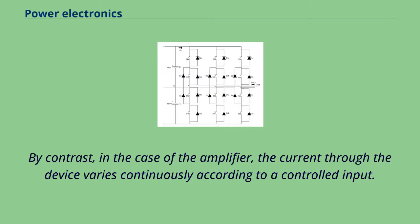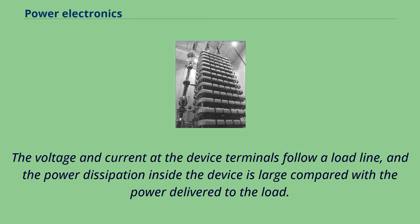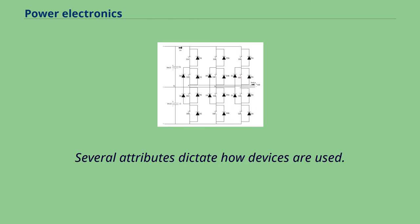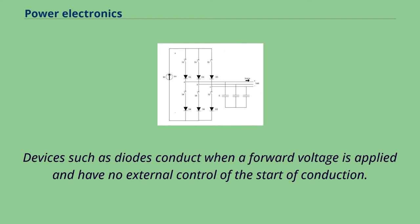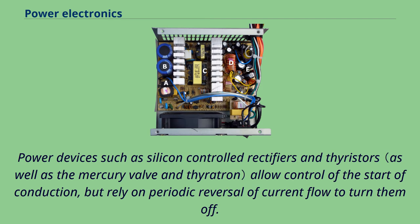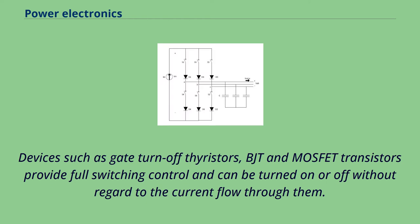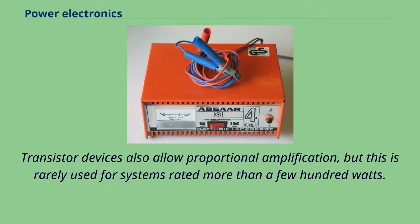By contrast, in the case of the amplifier, the current through the device varies continuously according to a controlled input. The voltage and current at the device terminals follow a load line, and the power dissipation inside the device is large compared with the power delivered to the load. Devices such as diodes conduct when a forward voltage is applied and have no external control of the start of conduction. Power devices such as silicon-controlled rectifiers and thyristors allow control of the start of conduction, but rely on periodic reversal of current flow to turn them off. Devices such as gate turn-off thyristors, BJT and MOSFET transistors provide full switching control and can be turned on or off without regard to the current flow through them.